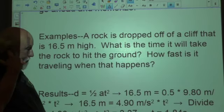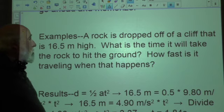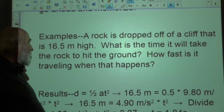So here's an example. A rock is dropped off a cliff that is 16.5 meters high. What is the time it will take for the rock to hit the ground? And how fast is it traveling when that happens?